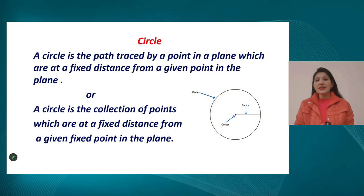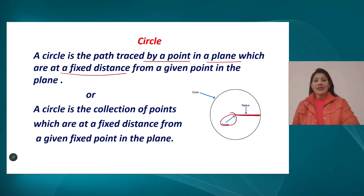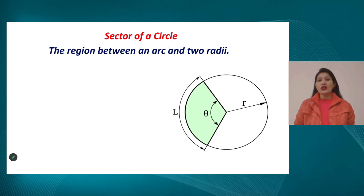Previous session mein humne circle ki various parts ke baare mein discuss kiya tha. We discussed what we mean by the diameter of a circle, the definition of a circle — circle is basically the path traced by a point in a plane that is at a fixed distance from a given point, which is known as the center. We discussed the radius, diameter, and circumference of a circle, and also studied about the sector of a circle.